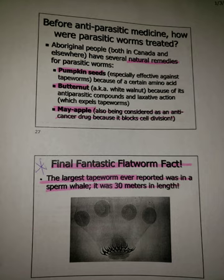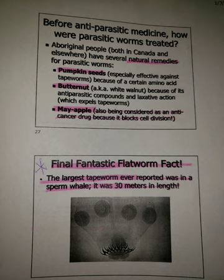Before anti-parasitic medicine, how were parasitic worms treated? Aboriginal people, both in Canada and elsewhere, have several natural remedies for parasitic worms. They can use pumpkin seeds, which are especially effective against tapeworms because of a certain amino acid in them. They use butternut, also known as white walnut, because of its anti-parasitic compounds and its laxative action, which expels the tapeworms. Or they use mayapple, also being considered as an anti-cancer drug because it blocks cell division.